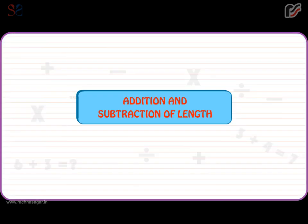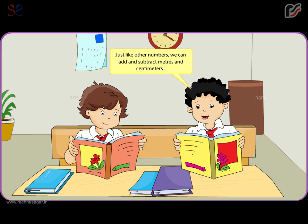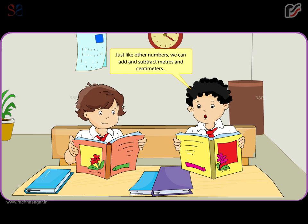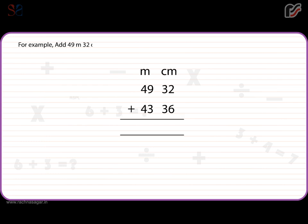Addition and subtraction of length. Just like other numbers, we can add and subtract meters and centimeters. For example, add 49 meters 32 centimeters and 43 meters 36 centimeters.